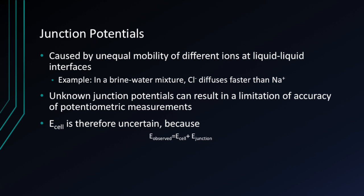Junction potentials are an example of a problem that can arise while using an electrode. They are caused by unequal mobility of different ions at a liquid-liquid interface. An example is the diffusion of chloride, which is faster than sodium+, in a brine-water mixture. Unknown junction potentials can limit the accuracy of potentiometric measurements. E-cell is therefore uncertain because the observed electric potential equals the electric potential of the cell plus the electric potential of the junction.